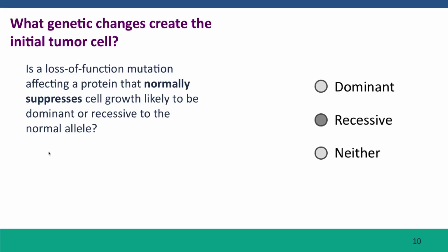The answer is it's likely to be recessive. This is a stop protein, and having only one functional stop protein is likely to be enough to still control the growth of the cell.